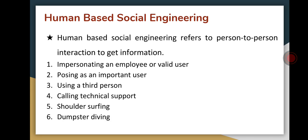The first method is impersonating an employee or valid user — meaning posing or acting as an employee from the same organization. This technique is used by most social engineers to deceive or fool people. The next is posing as an important user, where the attacker pretends to be an important user such as a CEO or a high-level manager who needs immediate assistance to access a system.